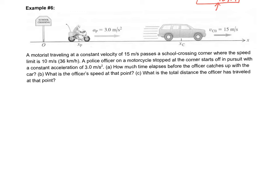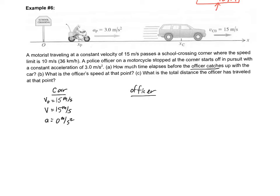There's not a lot of information given, but let's write down what we have. The question asks how much time elapses before the officer catches up with the car. We have two objects — the car and the officer. The car has an initial velocity of 15 m/s and a final velocity of 15 m/s, since it's traveling at constant velocity, meaning acceleration is zero meters per second squared.